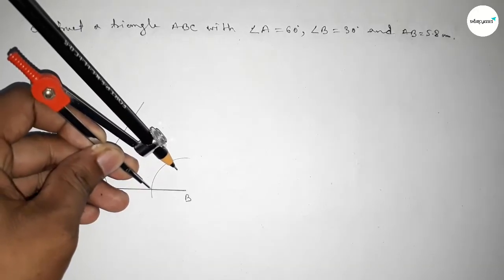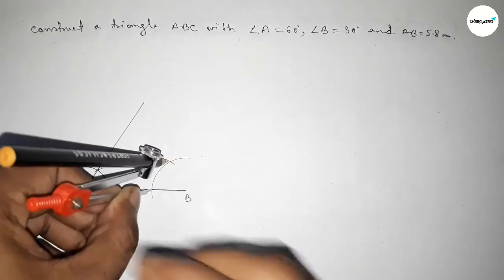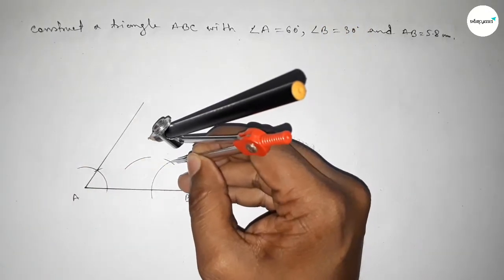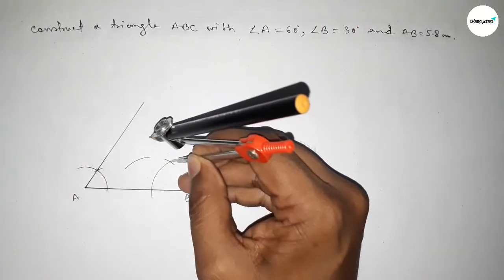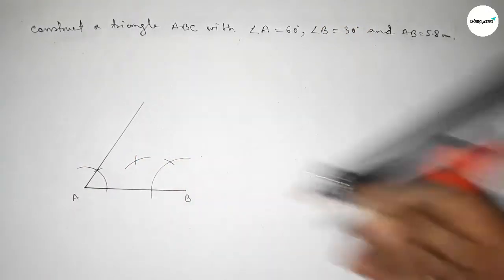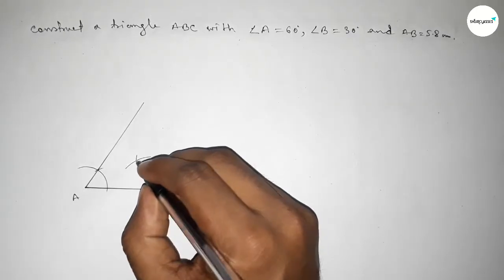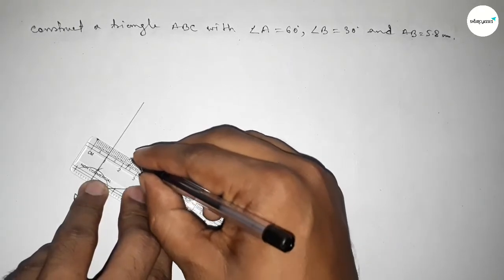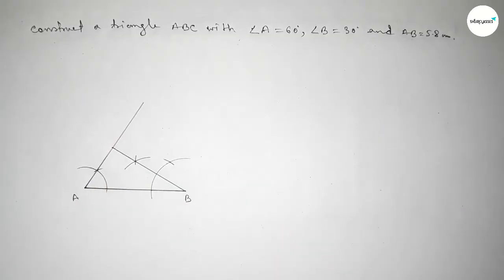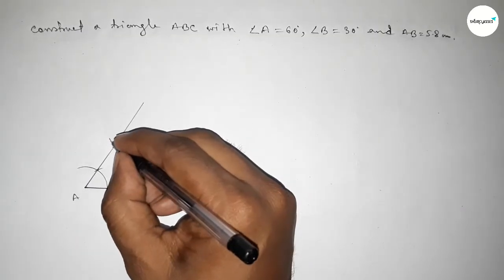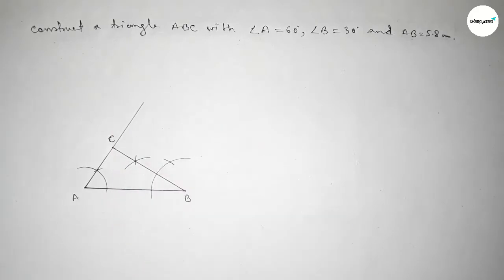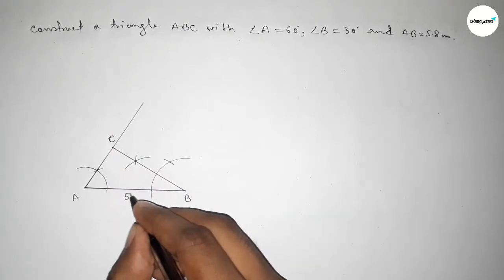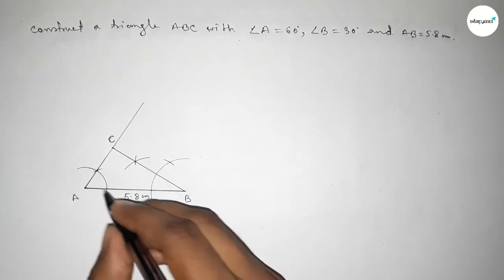Putting the compass with the same length and cutting here, then drawing an arc with the same length and putting the compass here and cutting here, so both curves intersect at a point. Joining this line to get a 30 degree angle, and both lines meet at point C.